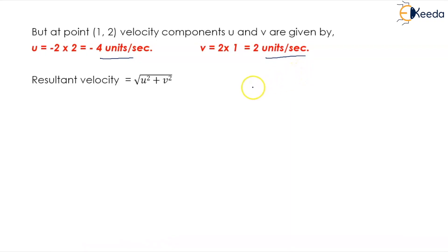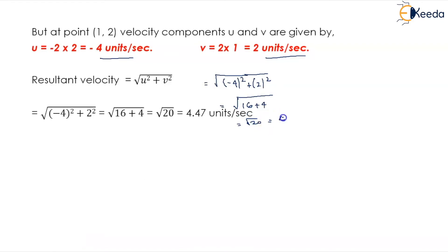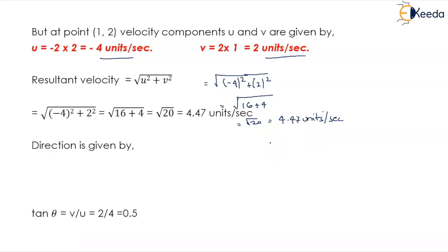The resultant velocity is equal to the square root of u squared plus v squared. So this becomes the square root of minus 4 squared plus 2 squared, which is the square root of 16 plus 4, equaling the square root of 20, which is 4.47 units per second. The direction is given by tan theta equals v upon u.